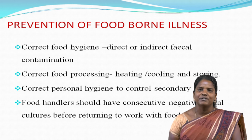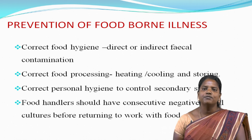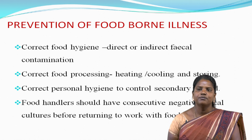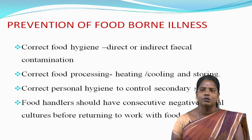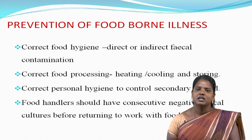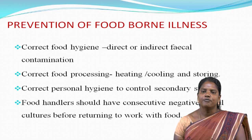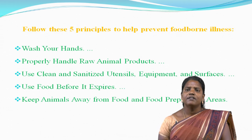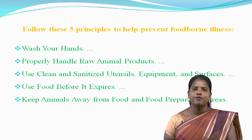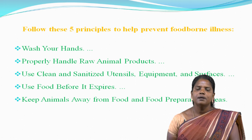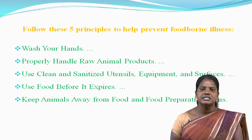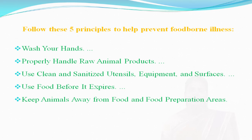Prevention of foodborne illnesses requires correct food hygiene to prevent direct or indirect fecal contamination, correct food processing — including heating, cooling, and storing — and correct personal hygiene to control secondary spread. Food analysts should have consecutive negative fecal cultures before returning to work with food. Five principles to help prevent foodborne diseases are: wash your hands, properly handle raw animal or vegetable products, use clean and sanitized utensils and equipment, use food before it expires, and keep animals away from food and food preparation areas.